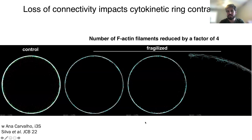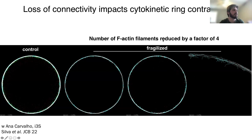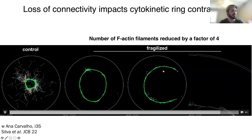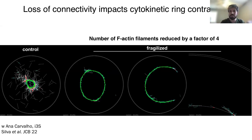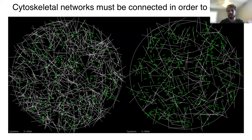I can also show a simulation done with Anna Carvalho from I3G. Here is a simulation of a cytokinetic ring. The control has all molecules present, and here is a fragilized ring where the number of actin filaments is reduced by a factor of four. Sometimes it works just fine, but then the ring becomes fragilized, you can actually break the ring, and then constriction fails. If you do not have enough elements in your system, you don't have connectivity and it cannot properly work.